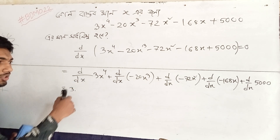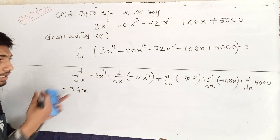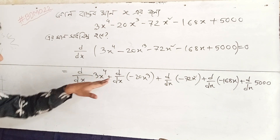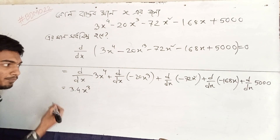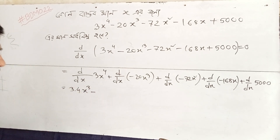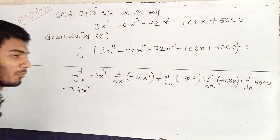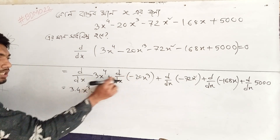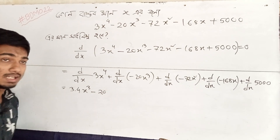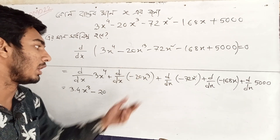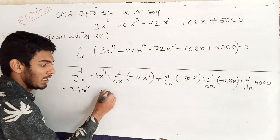So we will differentiate 3x⁴. The power is 4, so 4 times 3 is 12, and 4 minus 1 is 3, giving us 12x³. Then for minus 20x³: the coefficient 3 comes down, 3 times 20 is 60, giving minus 60x².